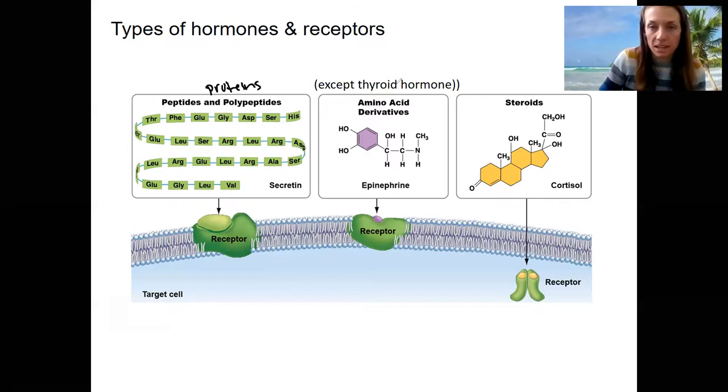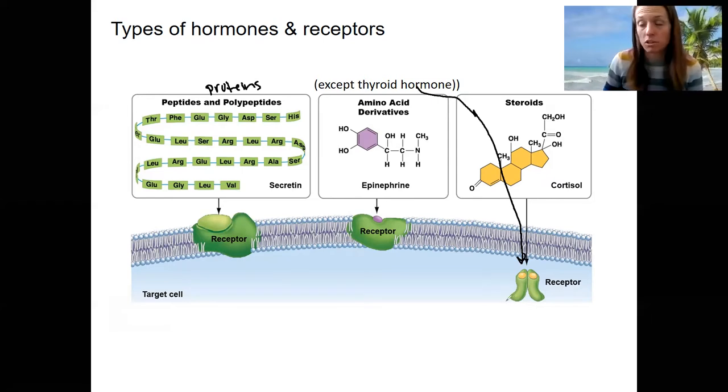Amino acid derivatives besides thyroid hormone bind to cell membrane receptors. Notice this is molecule smaller than this one. Steroids and thyroid hormone are going to bind to intracellular receptors. So understanding the properties of these is going to help us understand their function, structure function, right? So we will look at each of these three briefly to better understand each of them.